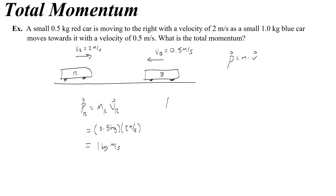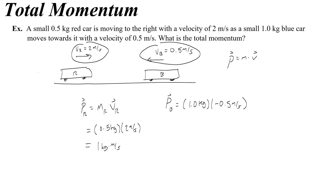For the blue car, the mass is 1 kilogram. But for the velocity, you wouldn't use a positive, but instead a negative 0.5 meters per second. This is because momentum is a vector, and if we decided that the 2 meters per second of the red car was positive, then we need to say that the velocity of the blue car is negative since it's going in the opposite direction. This gives you negative 0.5 kilogram meters per second.